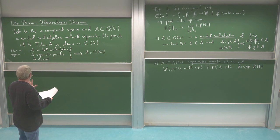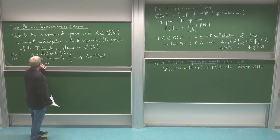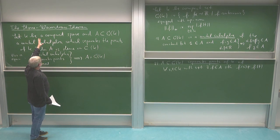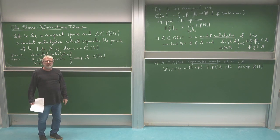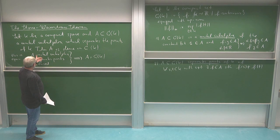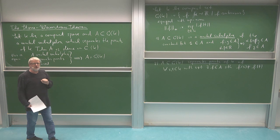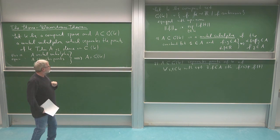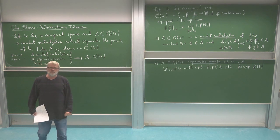If you want to show A is dense, you show that the closure of A is everything. Then you are in this setting because the closure still has these properties but is also closed. So that's what we want to prove.